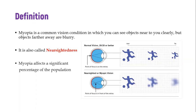The farther away an object is, the less clear it is or the blurrier it is. This condition is also called near-sightedness, by the fact that you're able to see clearly only objects that are near. Myopia is a very common kind of refractive error.